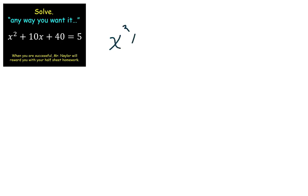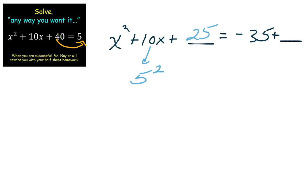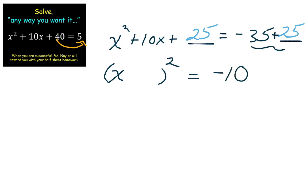One way is to complete the square — students often shy away from this, but it's actually pretty snazzy. First, scoot the 40 over to the other side by subtracting it. Leave a space for a new number. The number to add is half of the x-coefficient squared: half of 10 is 5, and 5 squared is 25. Add 25 to both sides. Then rewrite as a perfect square: negative 35 plus 25 is negative 10, and the squared binomial uses the half-number, so it becomes x plus 5, quantity squared, equals negative 10.